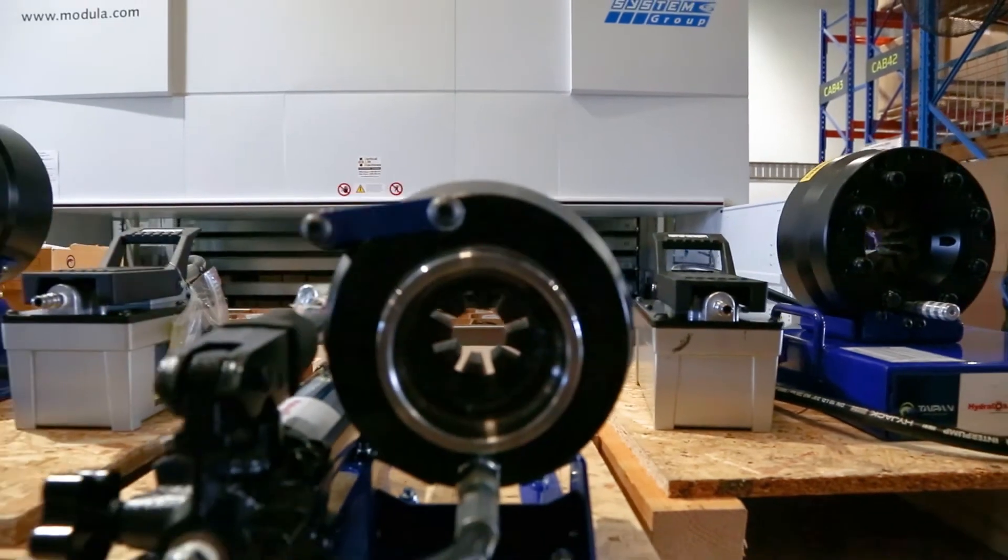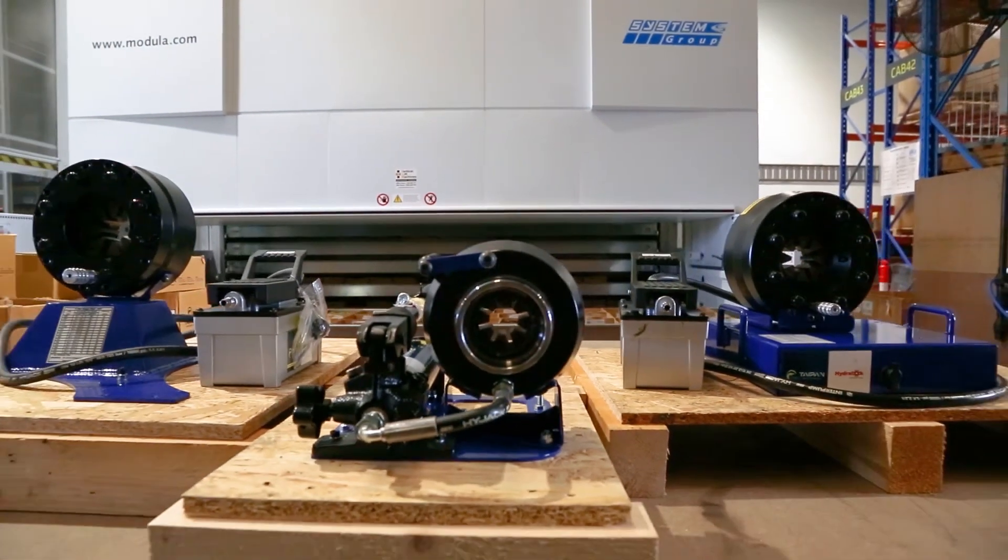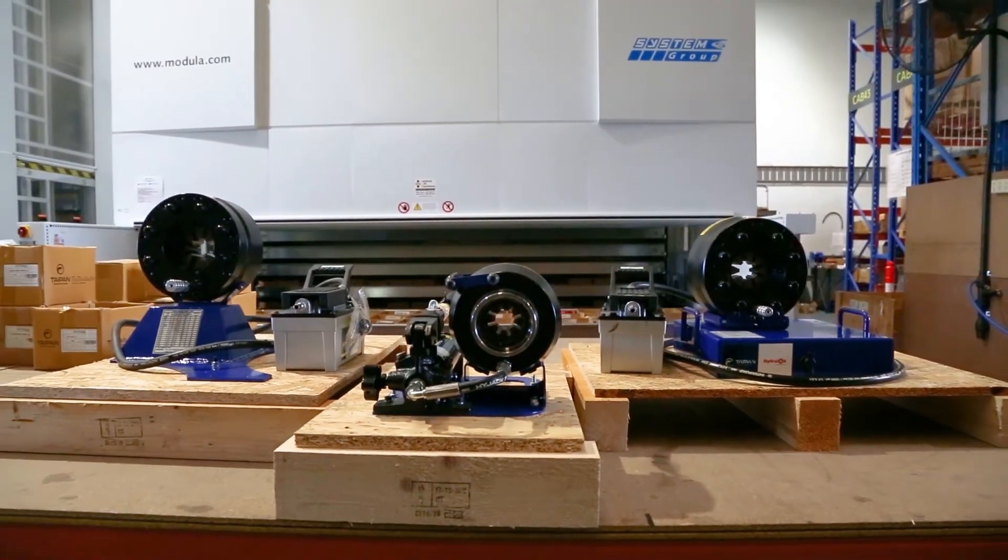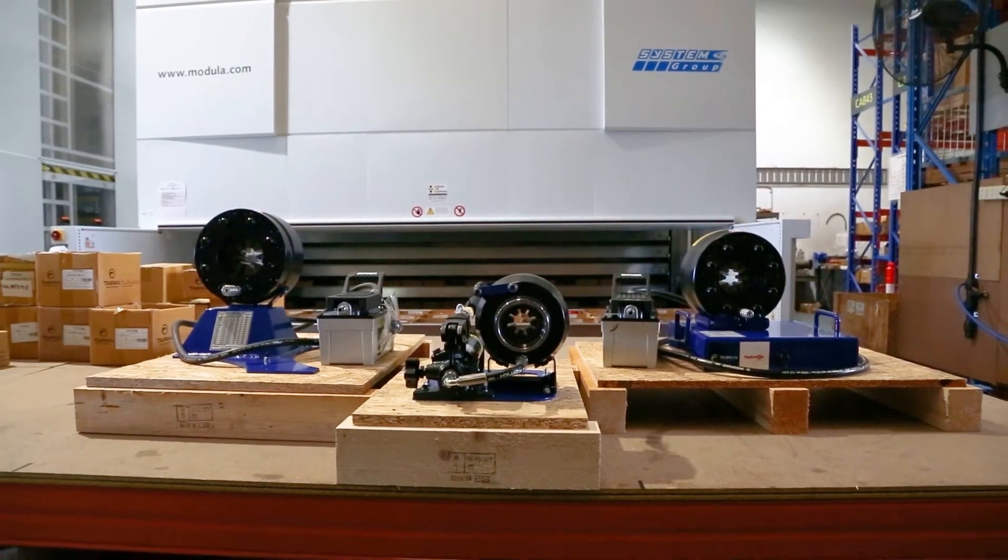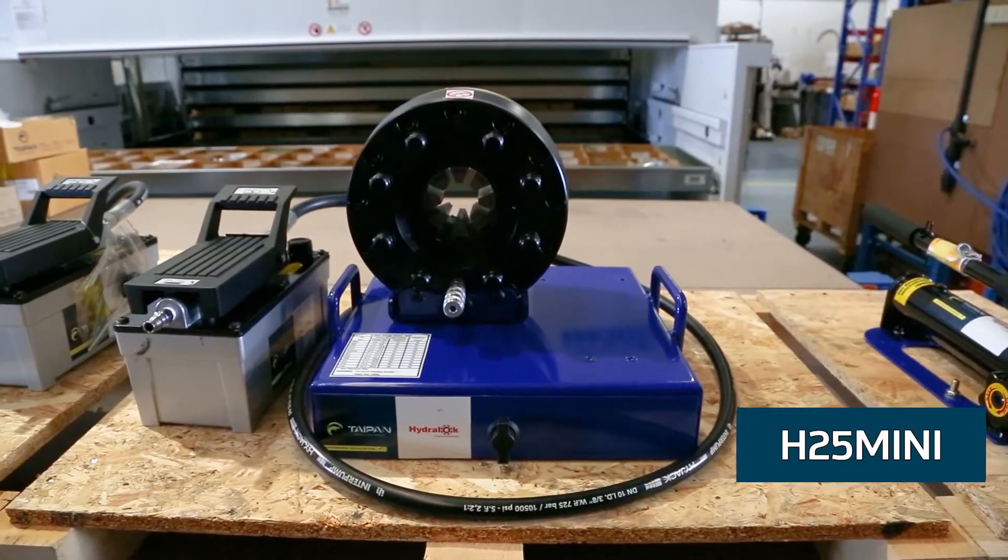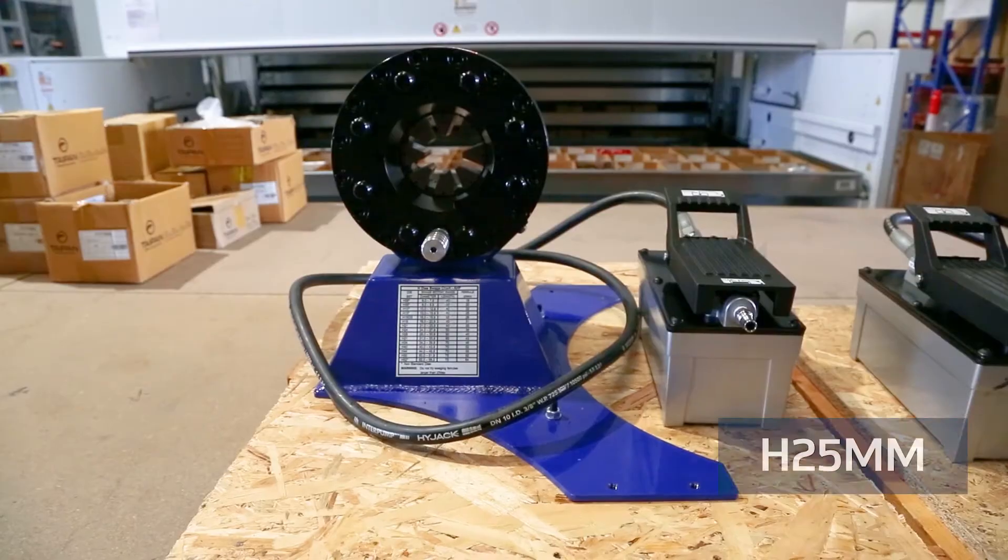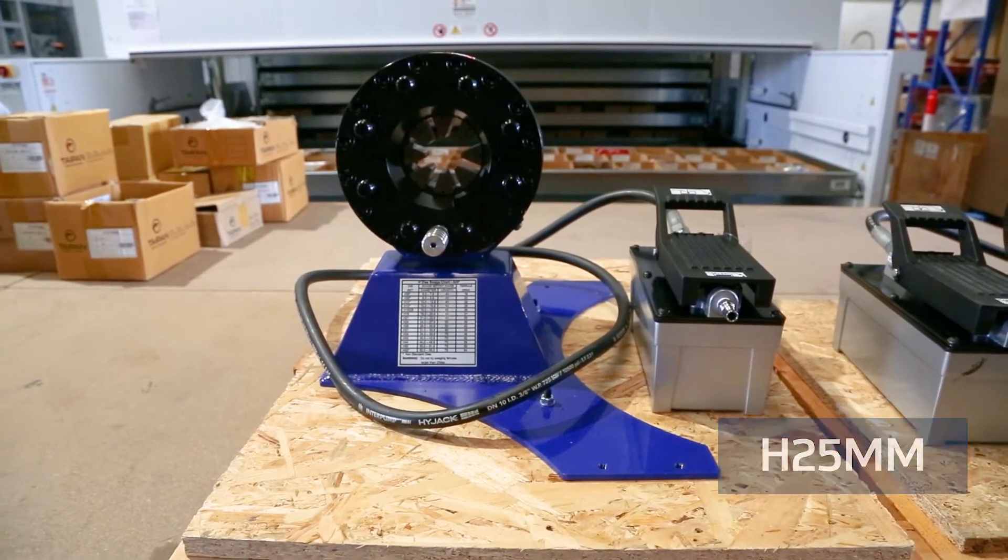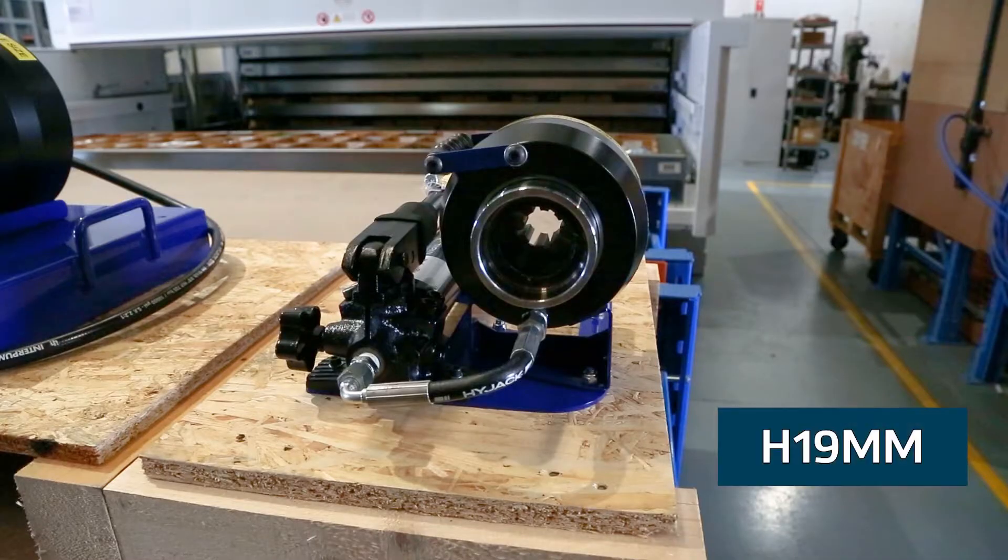To help you achieve the best results from your Taipan HydroLock crimping machines, we have put together the following short instructional video on how to use the H25 Mini, H25MM and H19MM crimpers.